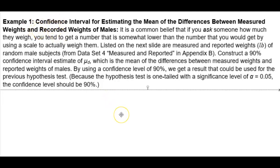Example 1. Confidence interval for estimating the mean of the differences between measured weights and recorded weights of males. It is common belief that if you ask someone how much they weigh, you tend to get a number that is somewhat lower than the number that you would get by using a scale to actually weigh them.